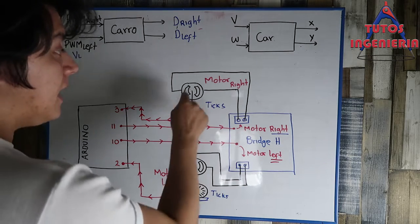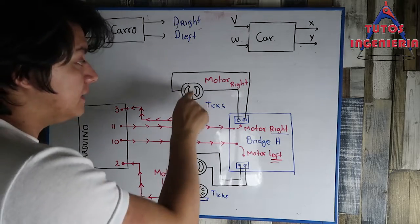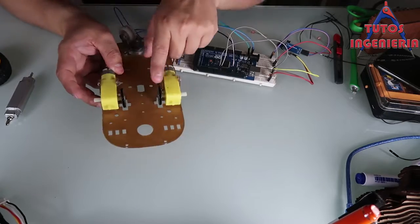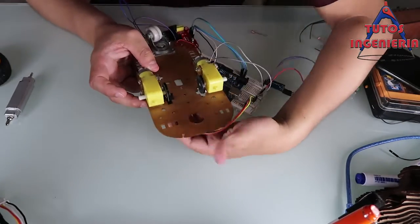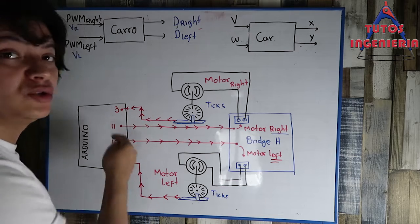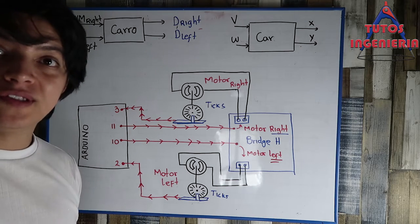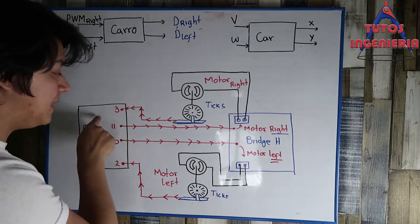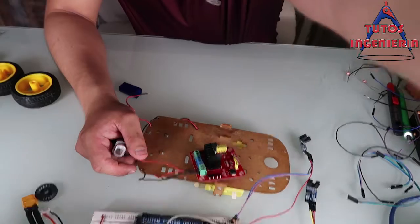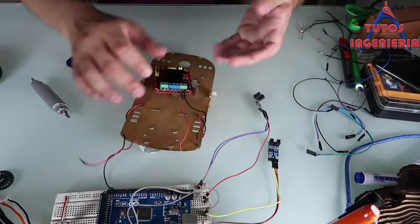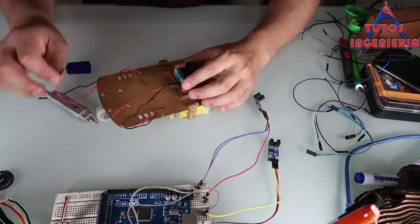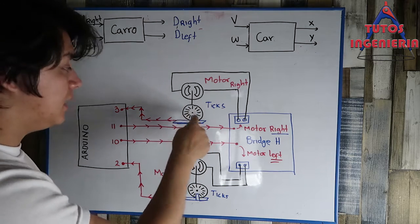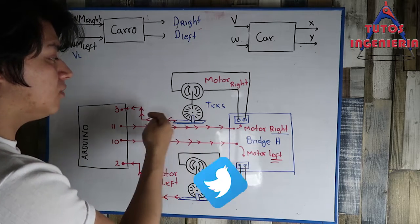When the motor moves, that movement makes an encoder move too, and that movement of the encoder makes it send a signal back to the microcontroller. You can see the loop — that is very important. Pin 11 sends the signal to the bridge edge, that makes the motor move, the encoder reads the movement.